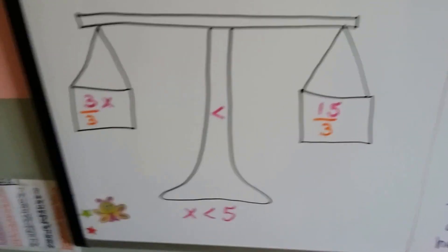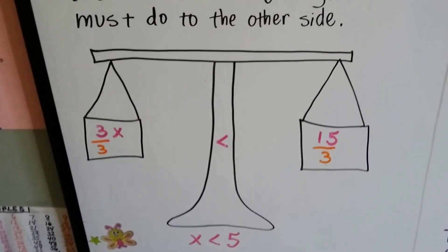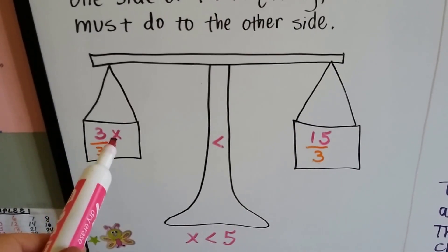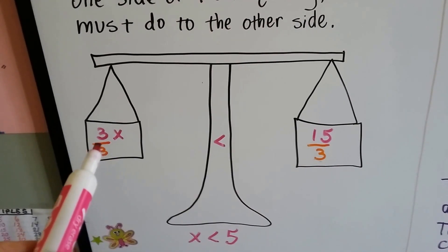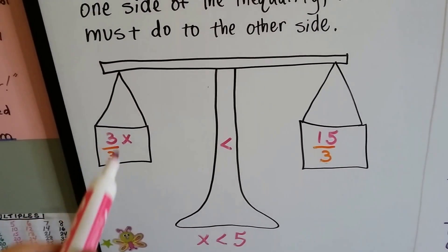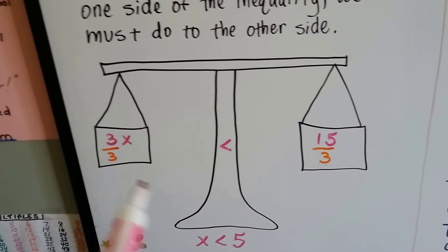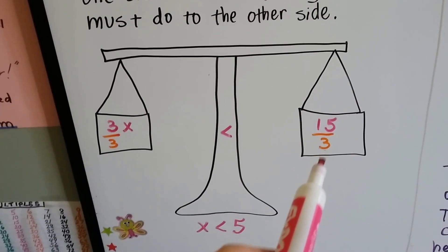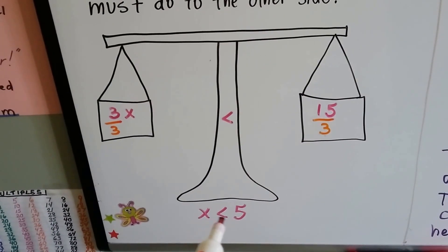If 3x is on one side of the scale and 15 is on the other side of the scale, to get this x by itself, we would have to divide by 3 to remove this 3. That would create a 1. But if we divide by 3 on this side, we've got to divide by 3 on this side, and our solution would be x is less than 5.